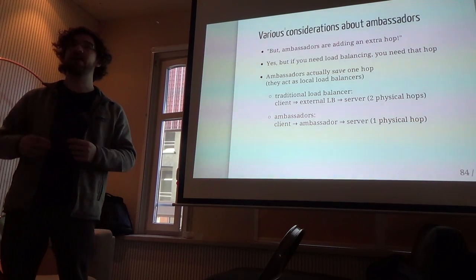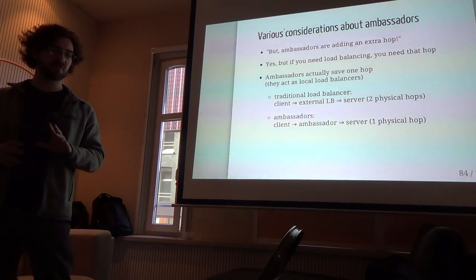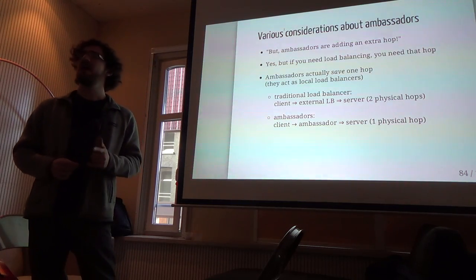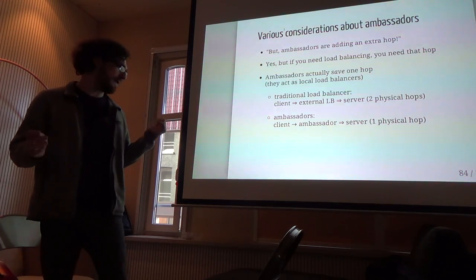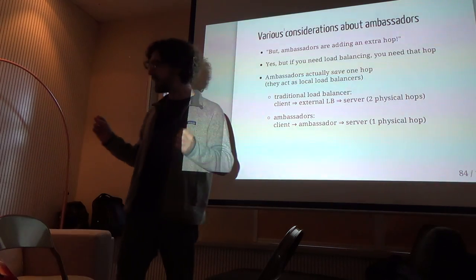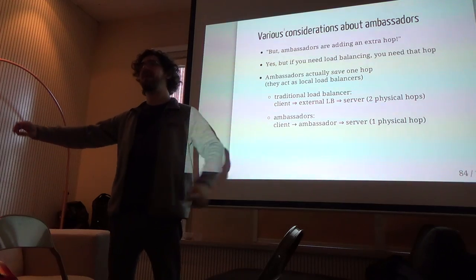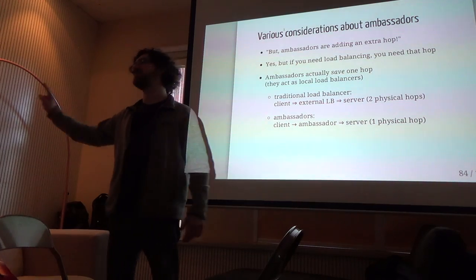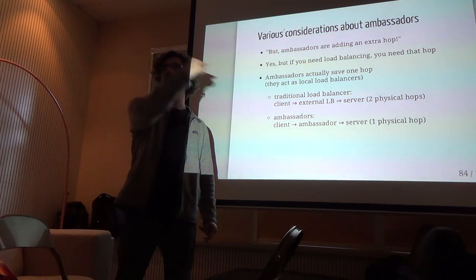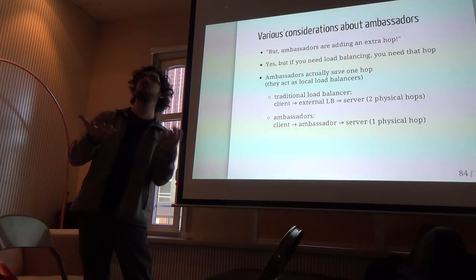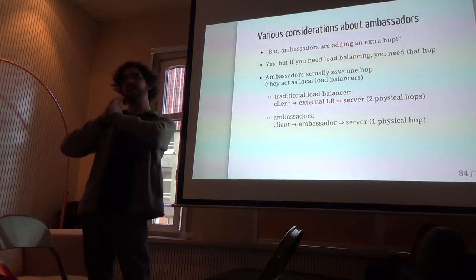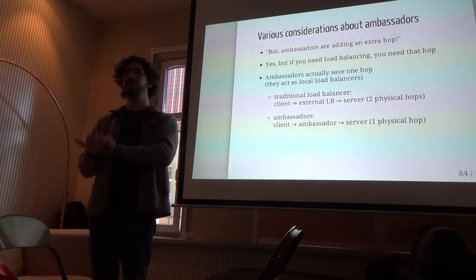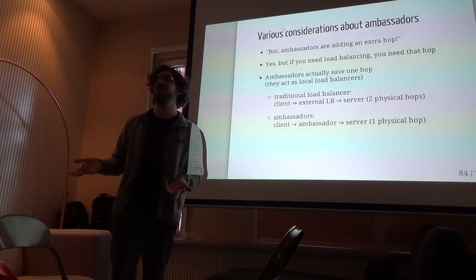Across multiple backends you need the load balancer, so you need the extra hop anyway. But if you compare with traditional old-fashioned load balancers, ambassadors actually save one hop. With a client, servers, and a load balancer in the middle, you go across two network links. With ambassadors, you have the ambassador local to the client — in the container right next to the client — so you do client to ambassador over a local connection, then ambassador to backend over a remote connection.